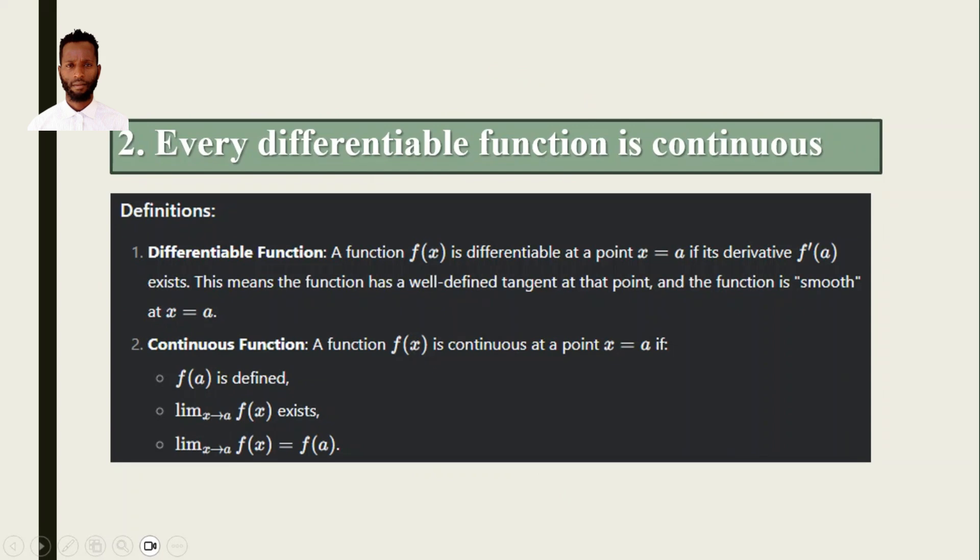To say a function is continuous, it must fulfill these criteria: if f(a) is defined, if limit as x approaches a of f(x) exists, and limit of f(x) as x approaches a equals f(a). This is the continuous function.